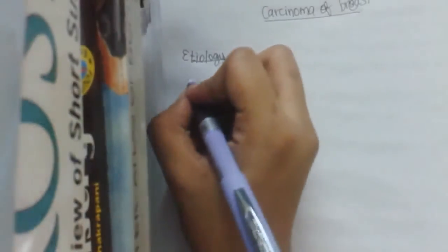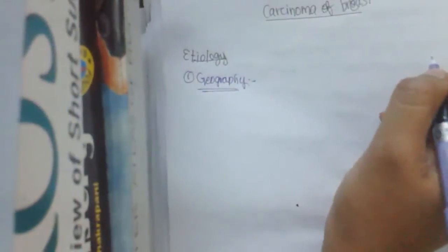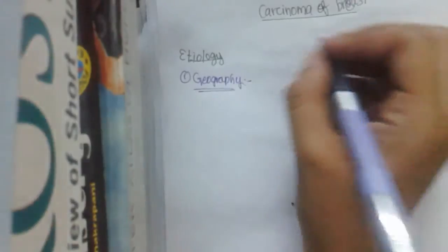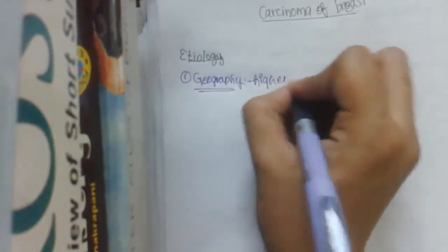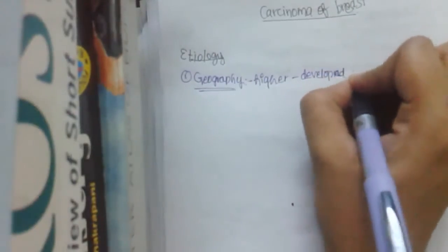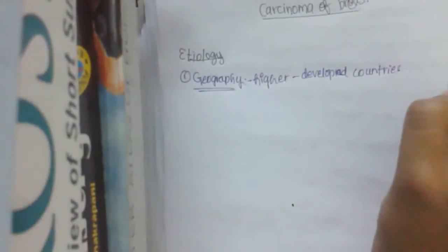So etiology. Right now, there are many clinical and experimental research being conducted in the field of breast cancer. So first, geography. To start with, some of the countries, I mean, the breast carcinoma is really very frequent in some countries, especially it is higher in developed countries.